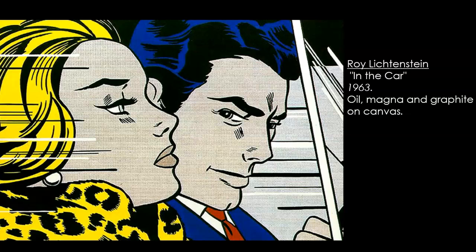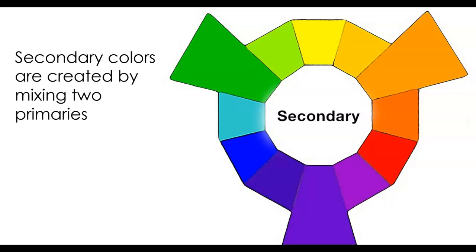Secondary colors are created by mixing two primary colors. For example, blue and yellow create green, yellow and red create orange, and blue and red create violet.